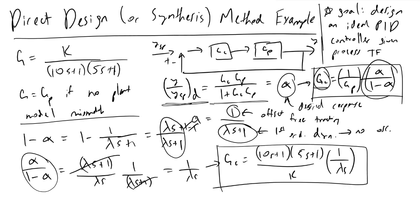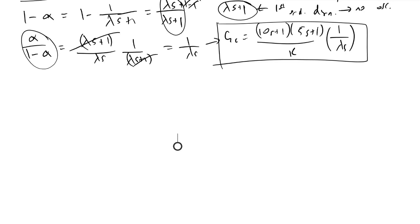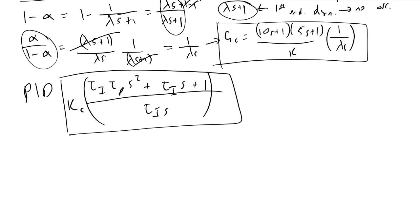And we're nearly there in terms of a standardized PID controller. The thing to note here is that PID controllers have the form tau i tau d s squared plus tau i s plus 1 divided by tau i s. And this whole term is multiplied by the controller gain kc. So we've got the three tuning parameters kc, tau i, and tau d. And so we need to get it into this form to report it to another engineer or on a write-up.